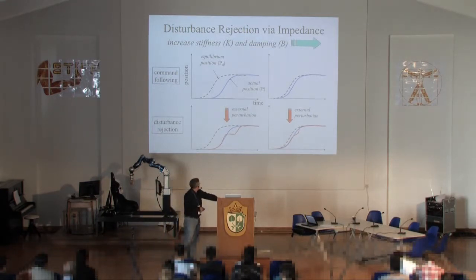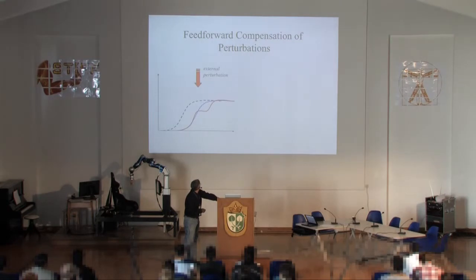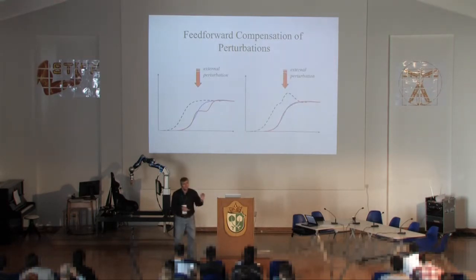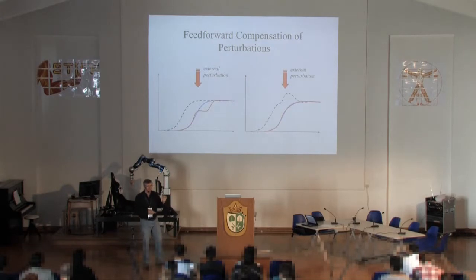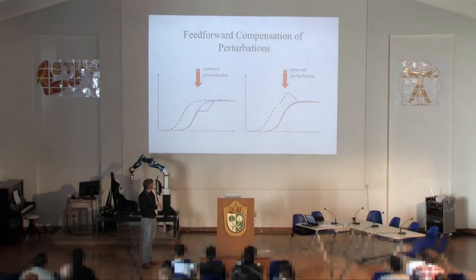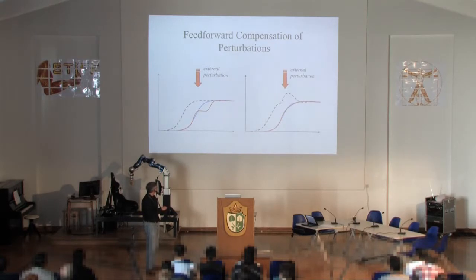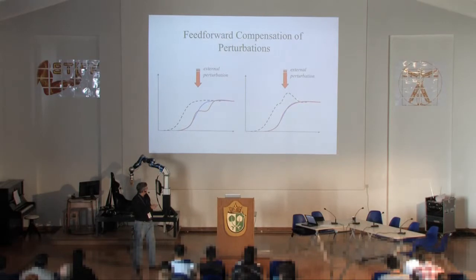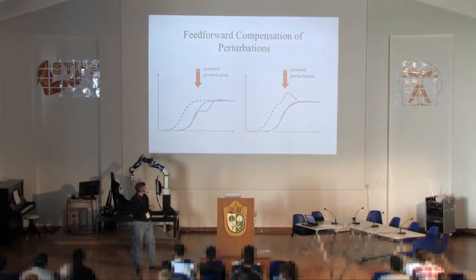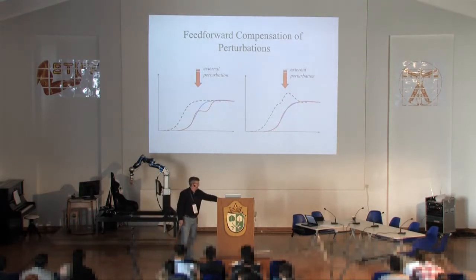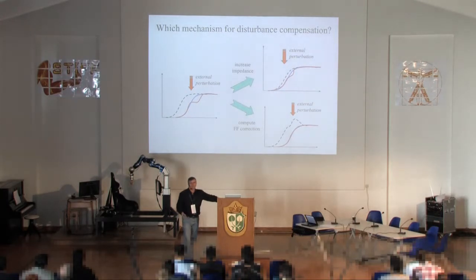There's another way: if I can anticipate the perturbation, I can correct for it by telling my system not to do exactly what I really want, but rather what I need to do in order to achieve the desired trajectory. On the red trial, I set the virtual equilibrium trajectory with a little extra bump because I know the perturbation is going to happen. By doing so, I can bring the system back to the desired trajectory.